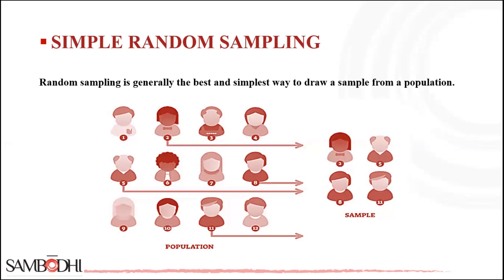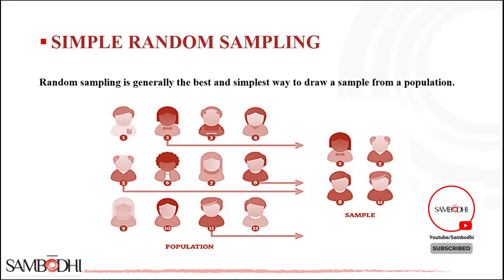We'll talk through an example which will give you a better idea about simple random sampling. In an organization of 500 employees, if the HR team decides on conducting team building activities, it is highly likely that they would prefer picking chits out of a bowl. In this case, each of the 500 employees has an equal opportunity of being selected. With random sampling, every member of the population has an equal opportunity to be included in the sample, and pure chance is the only factor that determines who goes into the sample. It is used to eliminate bias, both conscious and unconscious, that a researcher might introduce while selecting a sample.